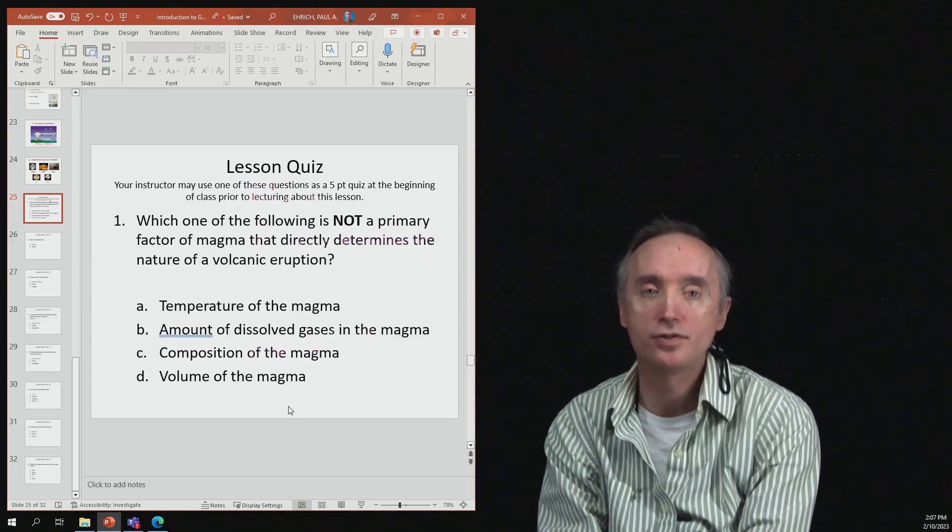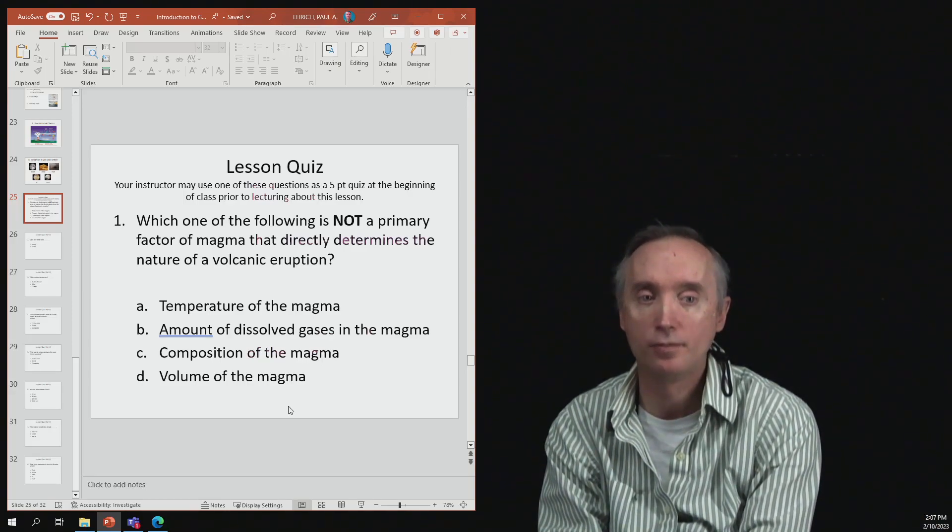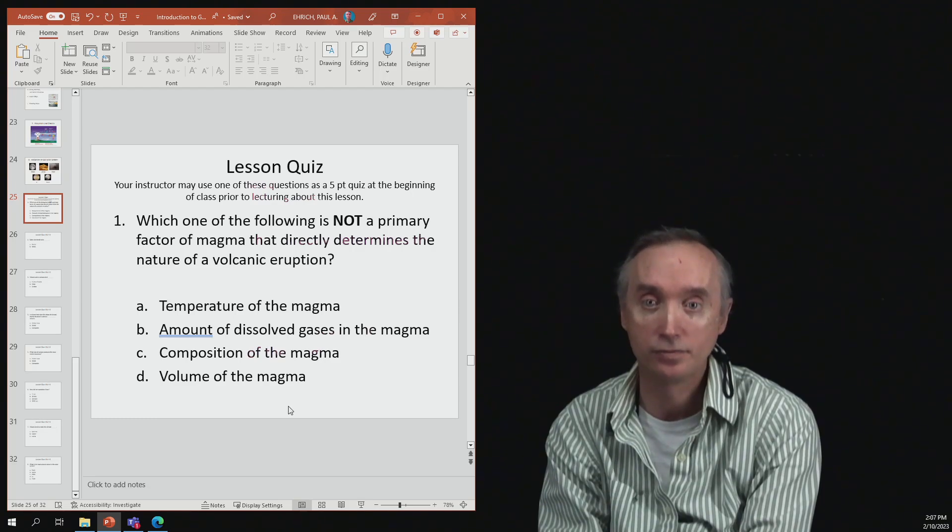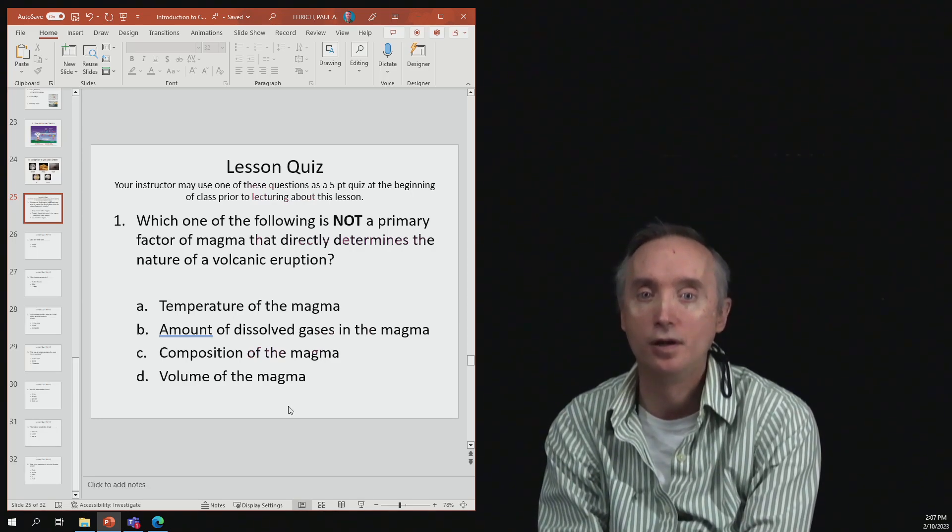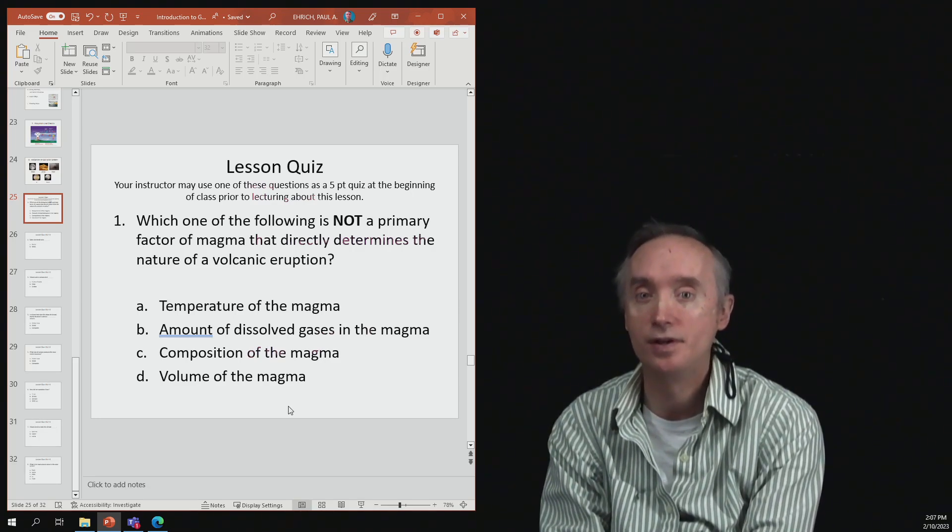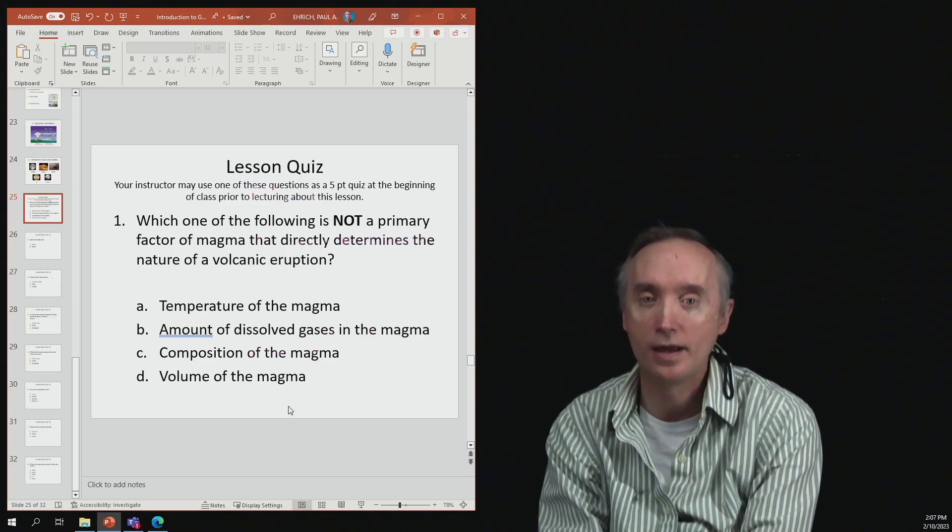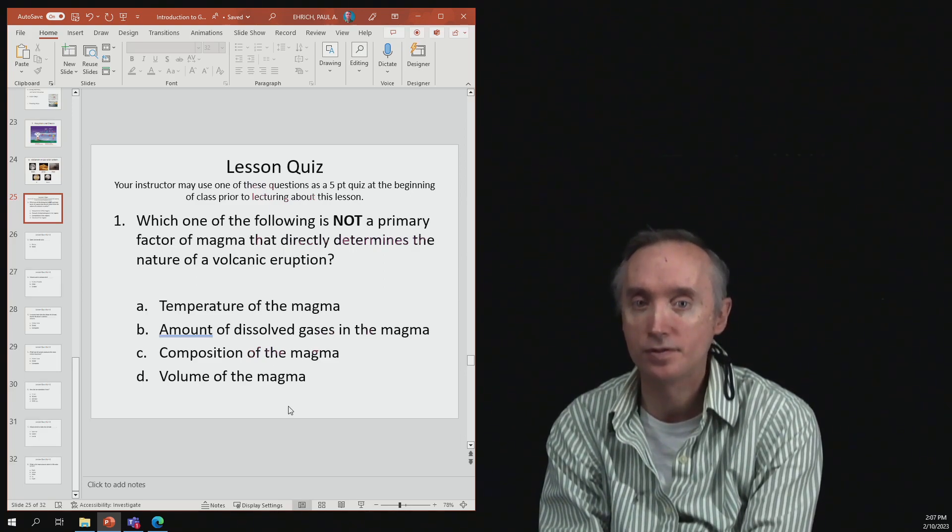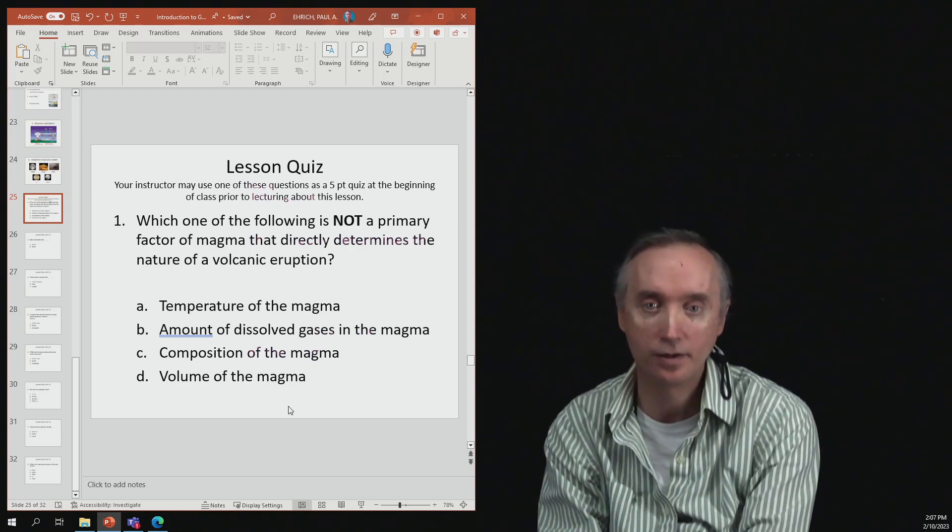In this final segment, we want to take a little quiz about volcanoes. Question number one: which one of the following is not a primary factor of magma that directly determines the nature of a volcanic eruption?